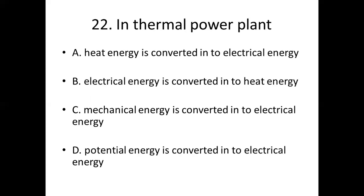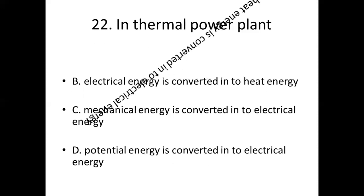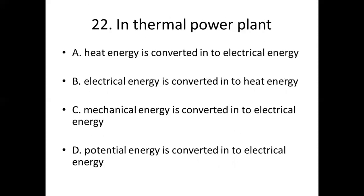22nd bit. In a thermal power plant: Option A, heat energy is converted into electrical energy. Option B, electrical energy is converted into heat energy. Option C, mechanical energy is converted into electrical energy. Option D, potential energy is converted into electrical energy. Answer: Option A, heat energy is converted into electrical energy.